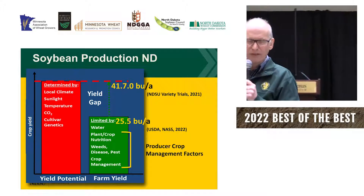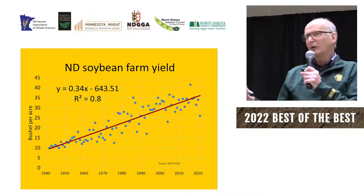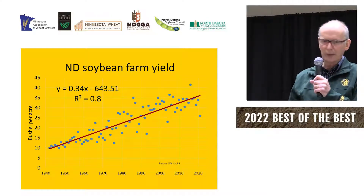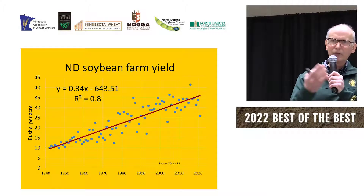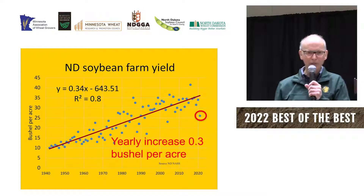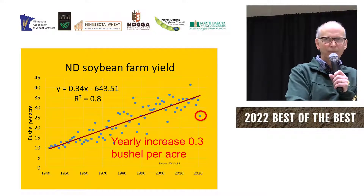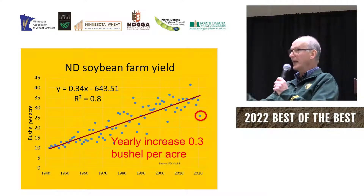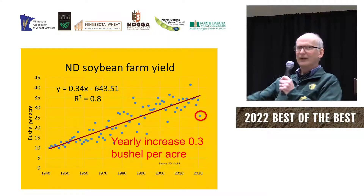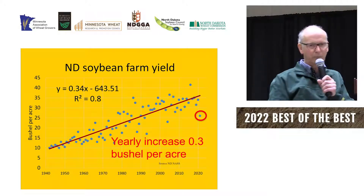Looking at yield data for all of North Dakota from 1940 to 2021, the dots indicate yield as reported by the statistical service — there's a nice trend line. The formula shows about a third of a bushel increase per year. There are three main factors: one, genetics has increased over time; two, management has improved — you've done an outstanding job; and the third, which we can't do much about, is weather — that's where you see the variability in the dots.